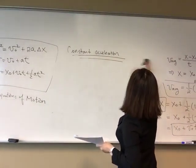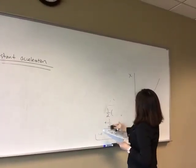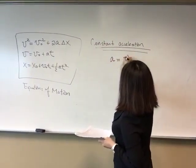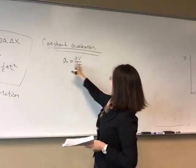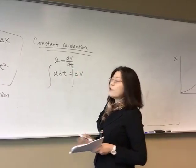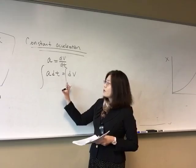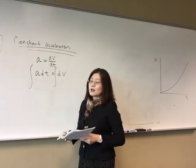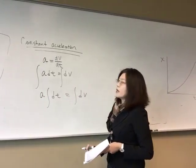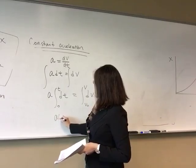Now let's look at another equation. The average velocity is defined as (x₂ minus x₁) over delta T. Using the same terminology, the initial position is x₀ and the final position is x. So you have the final position minus initial position over time. Rearranging, the final position x equals the initial position plus the average velocity times time. The average velocity can also be expressed as the sum of initial and final velocities divided by 2, giving the average velocity as (v₀ + v) / 2.